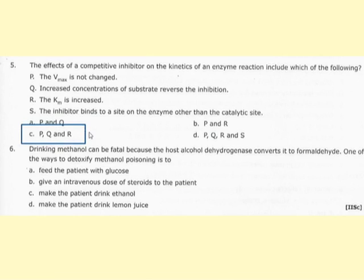Effects of a competitive inhibitor on enzyme reaction kinetics: Vmax is not changed (correct); increased substrate concentration reverses the inhibition (correct); Km is increased (correct); the inhibitor binds to a site other than the catalytic site — this is not correct for competitive inhibitors, which bind at the active site. Therefore the answer is P, Q, and R.